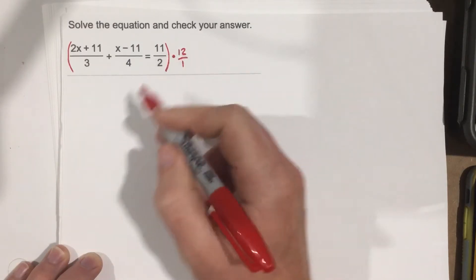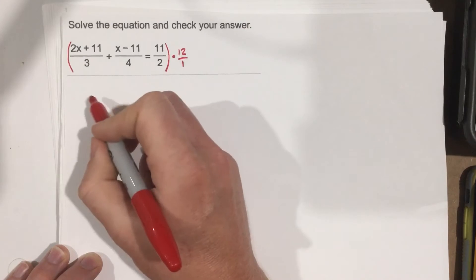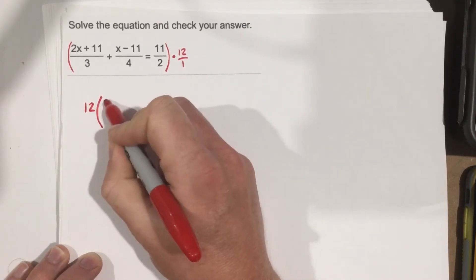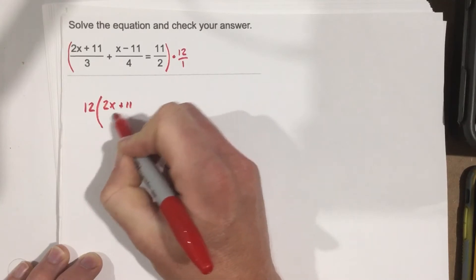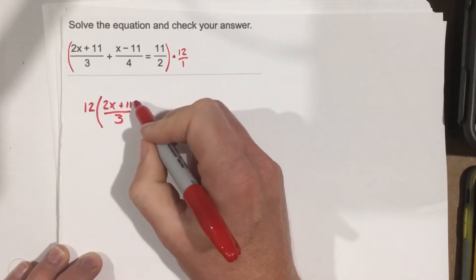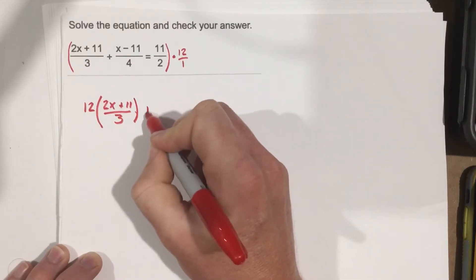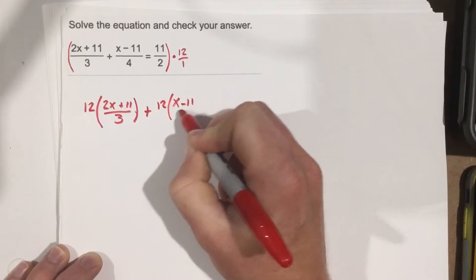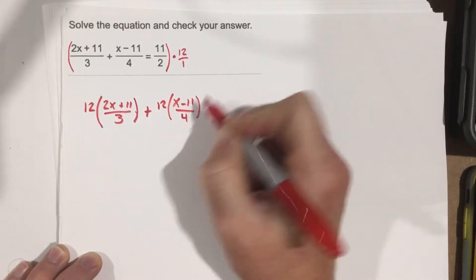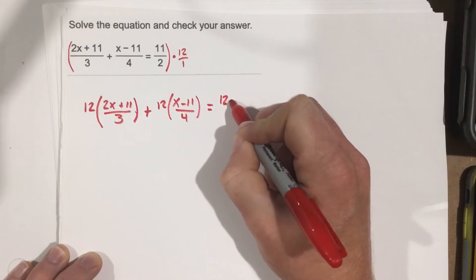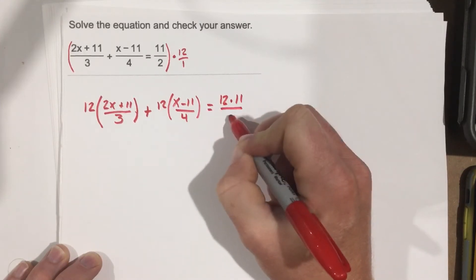we write this out as 12 times (2x+11)/3, plus 12 times (x-11)/4 equals 12 times 11/2.